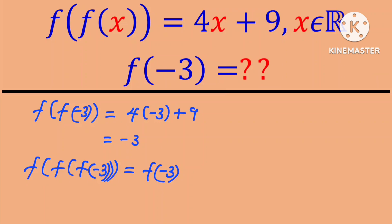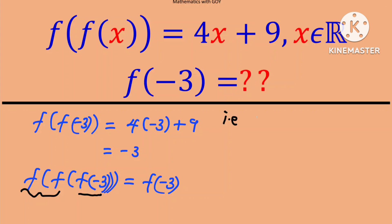And looking at the left-hand side, we can see that f of negative 3 has to be substituted in the function f of f. That is, 4 times f of negative 3 plus 9 is equal to f of negative 3.